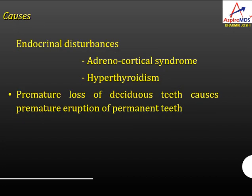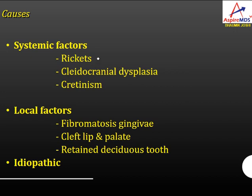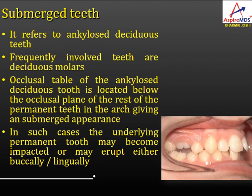Causes of premature eruption include endocrine disturbances such as adrenocortical syndrome or hypoparathyroidism; premature loss of deciduous teeth can also cause premature eruption of permanent teeth. Delayed eruption is when teeth erupt much later than normal, affecting both deciduous and permanent dentition. Systemic factors include rickets, cleidocranial dysplasia, and cretinism. Local factors include fibromatous gingiva, cleft lip and palate, and retained deciduous teeth. It can also be idiopathic. Submerged tooth refers to an ankylosed deciduous tooth.